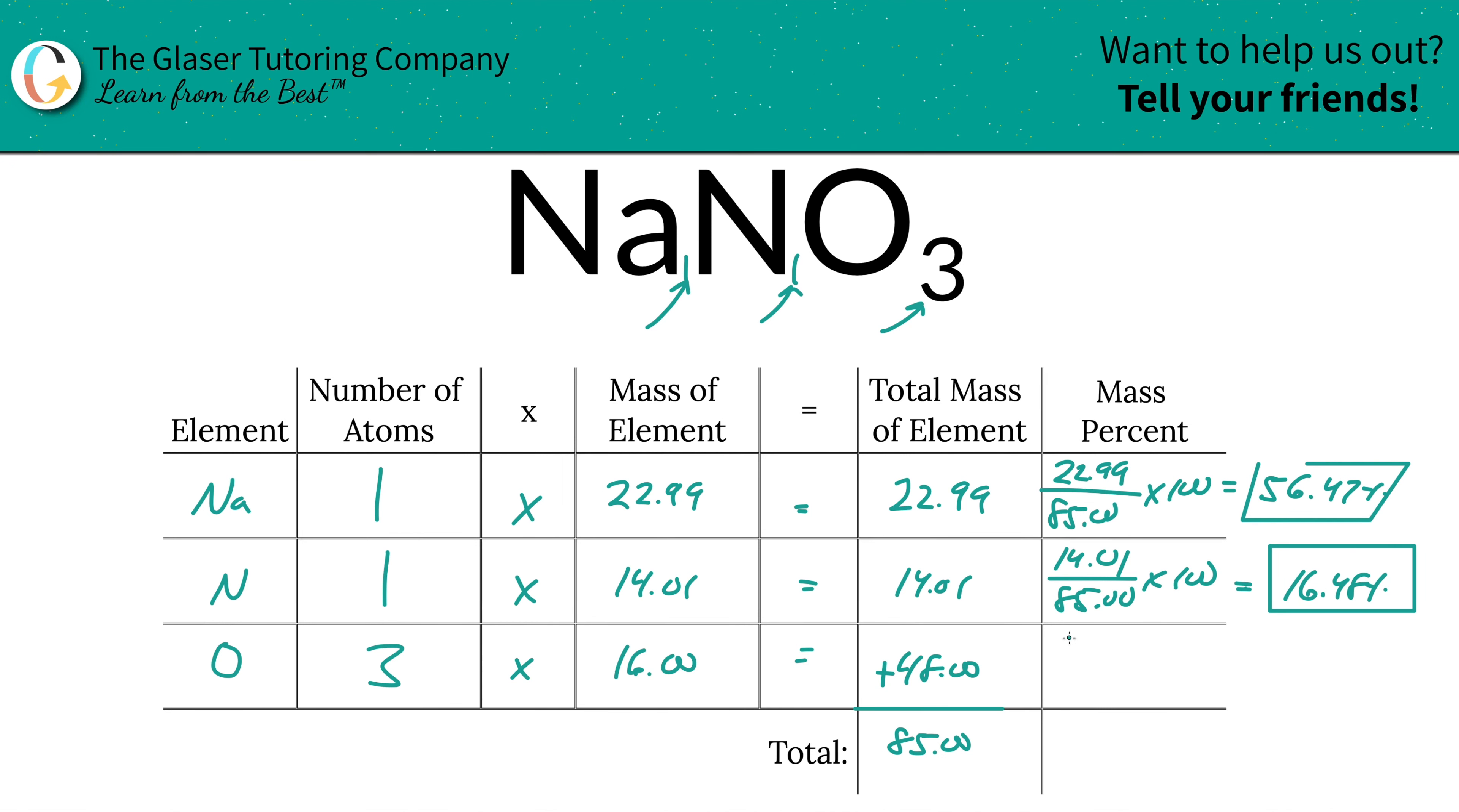Last but not least, we have oxygen. We're going to take 48 divided by 85. Be careful with the significant figures. I don't put in the zeros because it doesn't affect the calculation, but in the end you want to have the right number of significant figures. We have videos on that if you want to check out our channel.